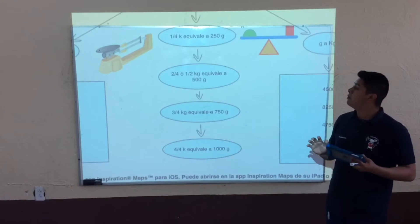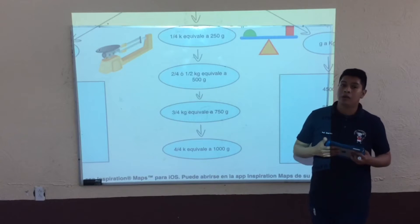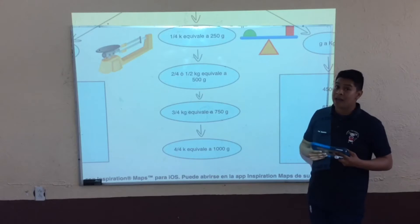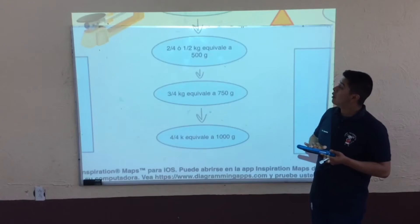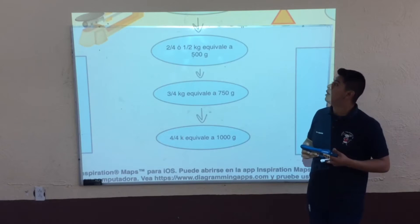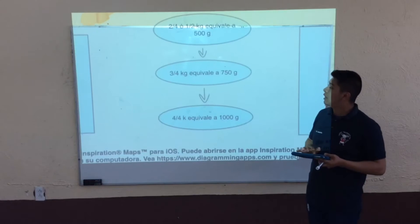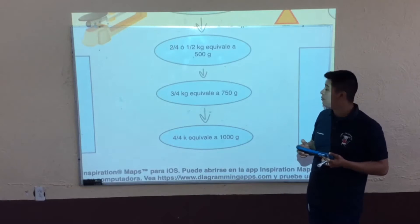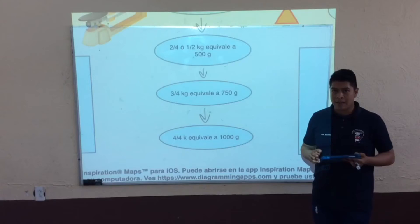Vamos a tener en claro primero cuánto equivale un cuarto de kilogramo. Un cuarto de kilogramo equivale a 250 gramos. Dos cuartos o un medio de kilogramo equivale a 100 gramos. Tres cuartos de kilogramo equivale a 750 gramos, y cuatro cuartos equivale a 1000 gramos.